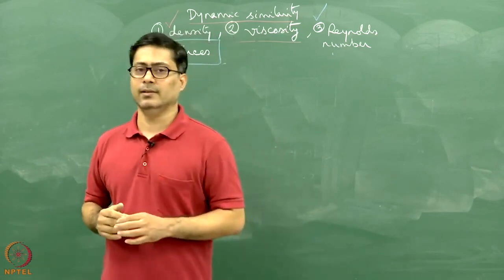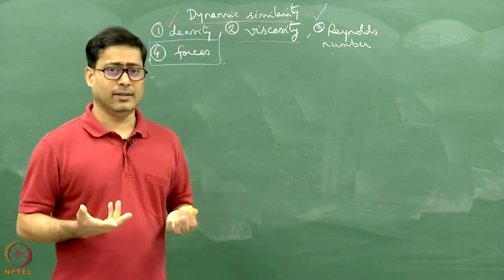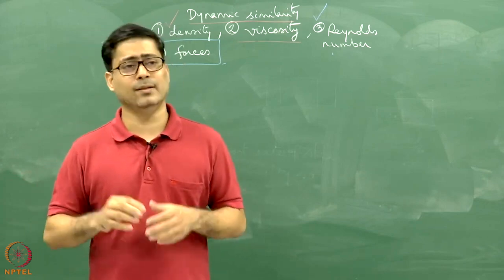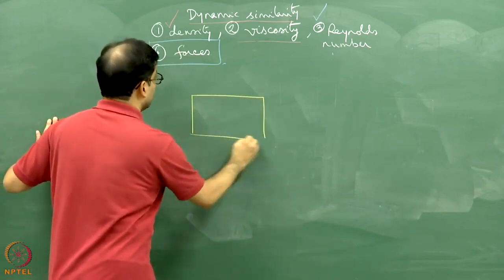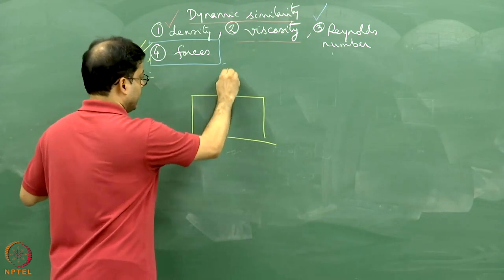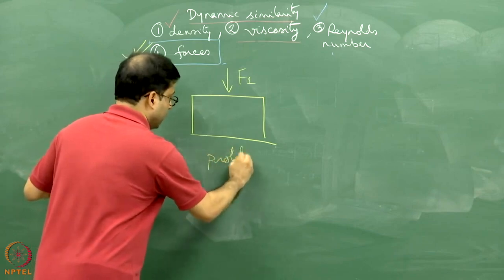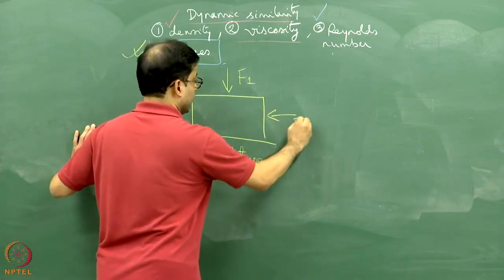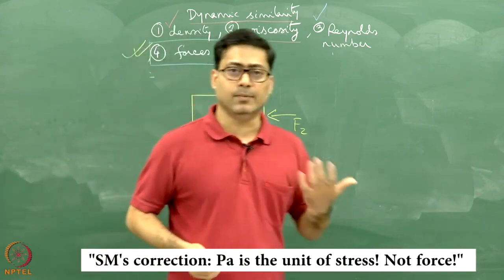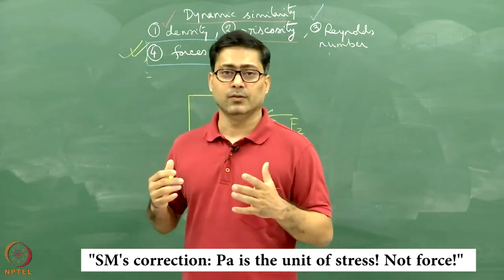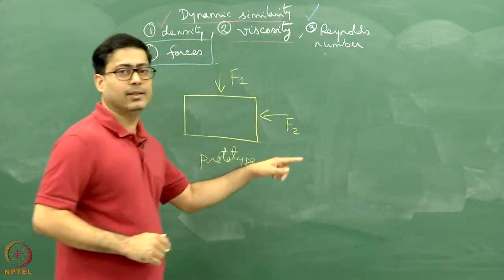In geological cases, there can be more than one direction where compression, extension, shear, etc. can work. If you look at the plate tectonic regime — how plates are behaving, deforming, or some smaller scale deformation — it is quite possible that there are more than one directions of stresses. For example, in this prototype, there is a force F1 and a force F2 working, and they are very large — gigapascal, mega-pascal scale — because plates are moving.